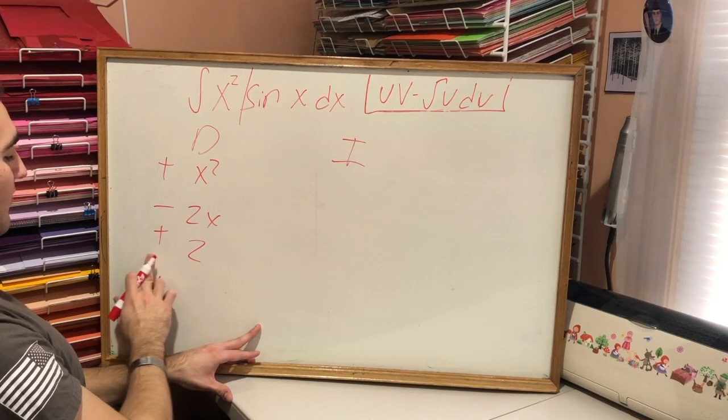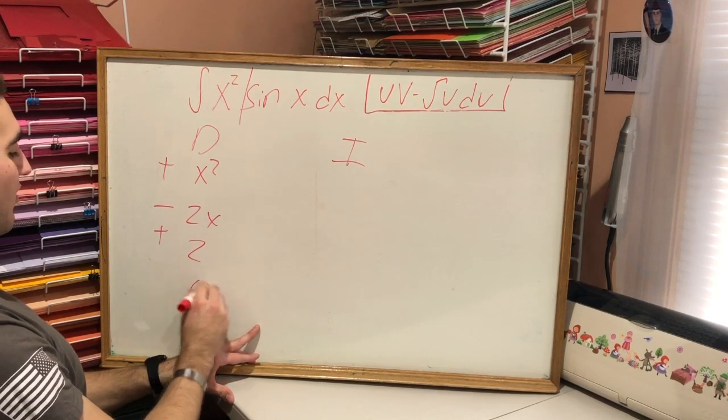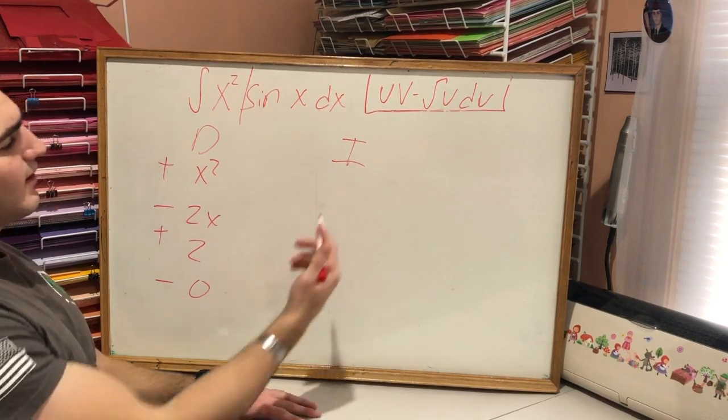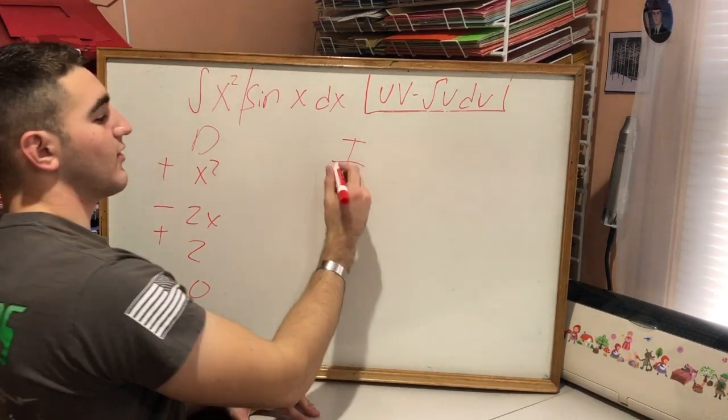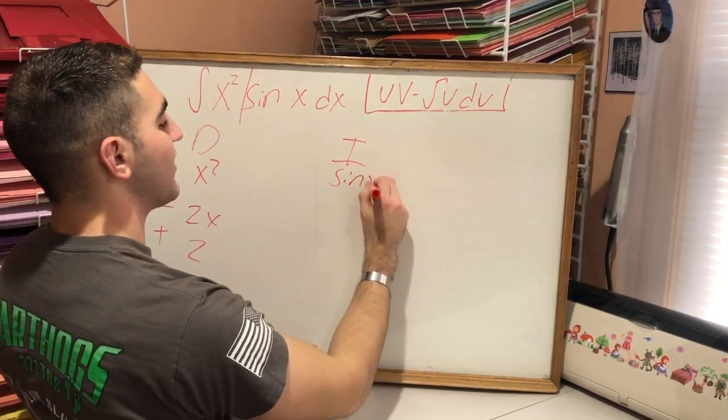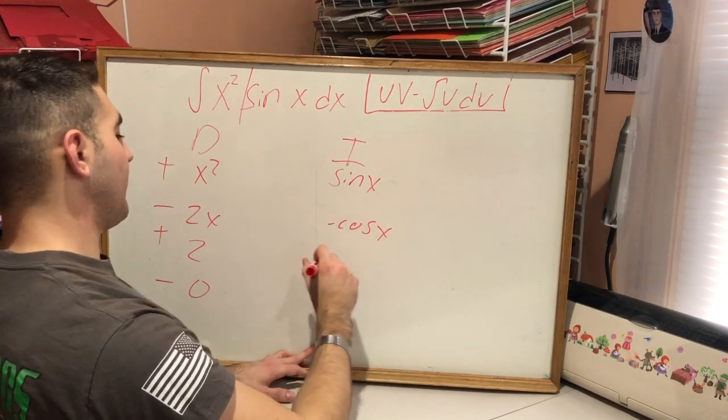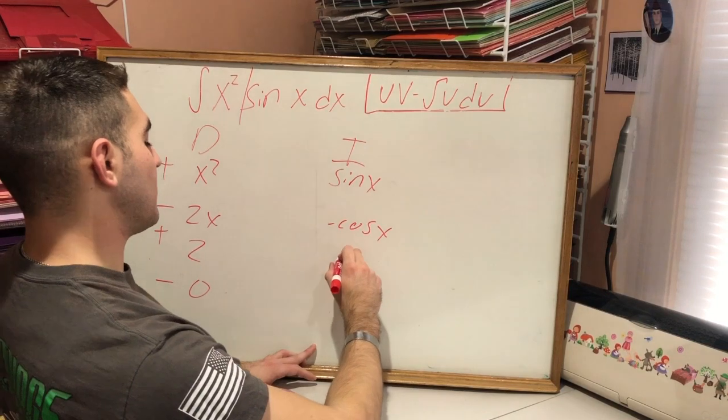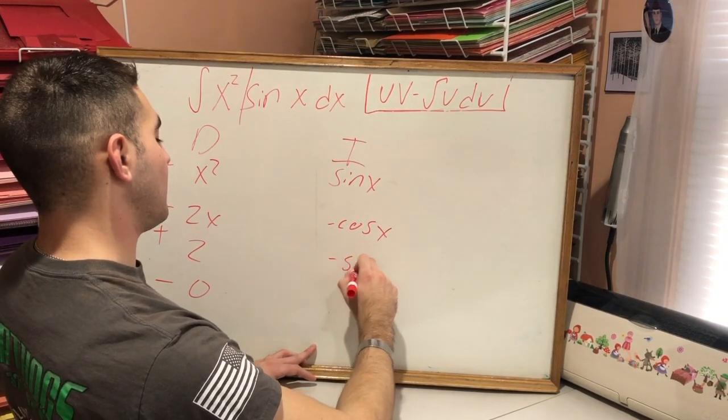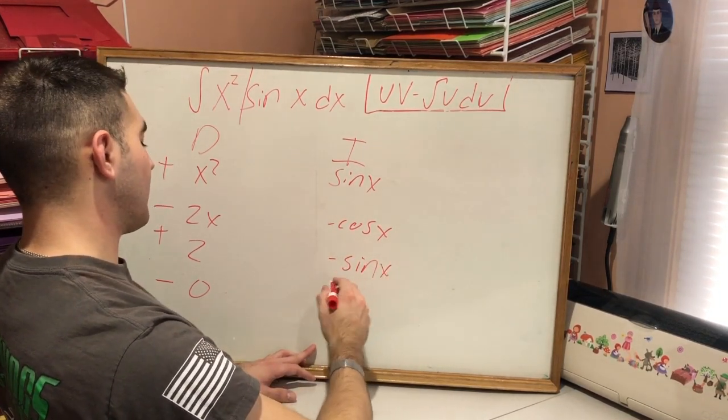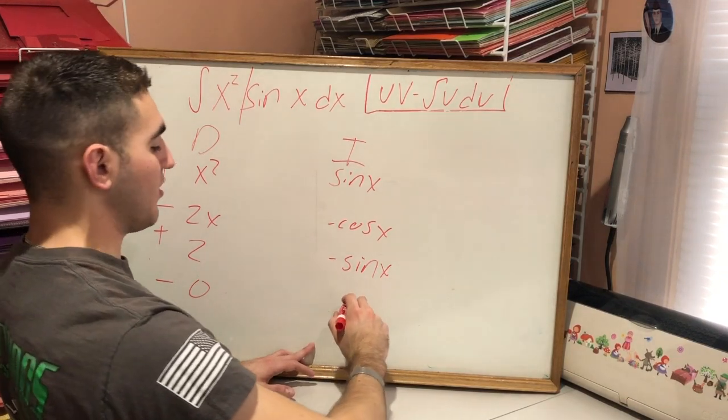We're going to start off deriving x squared. Derivative is 2x, derivative of 2x is 2, derivative of 2, make it simple, is 0. All right, and from here we're going to integrate sine x. Integral of sine x is negative cosine x, right? Negative cosine x. And then the integral of negative cosine x is negative sine x. And then the integral of negative sine x is cosine x.